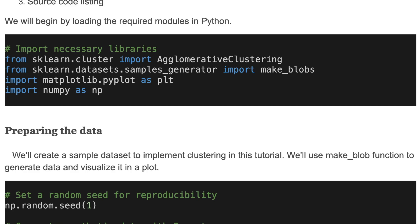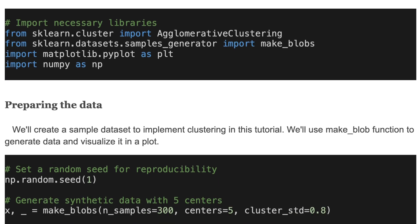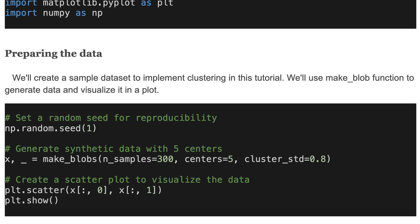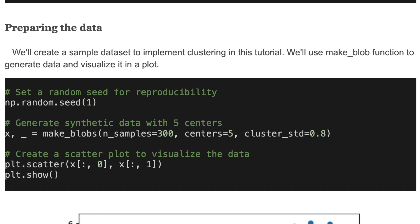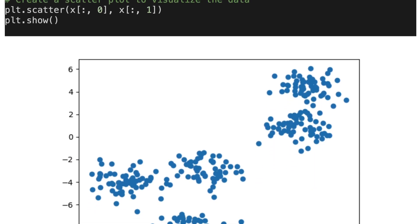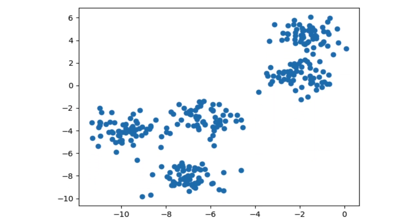We'll create a sample dataset to implement clustering. We use the make_blobs function to generate data and visualize it in a plot. In this code we set a random seed, then generate synthetic data with five centers, and create a scatter plot to visualize the data. This is the target data to cluster.